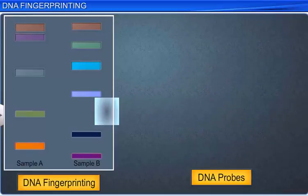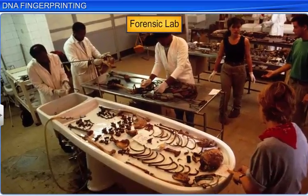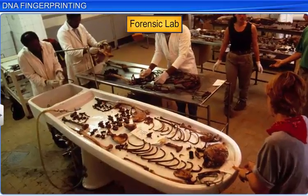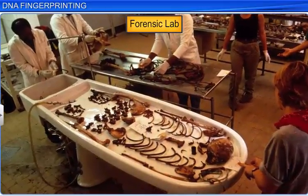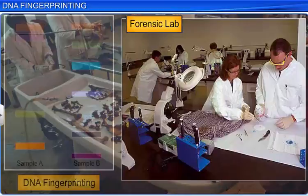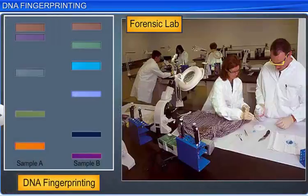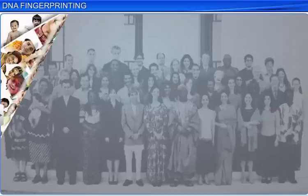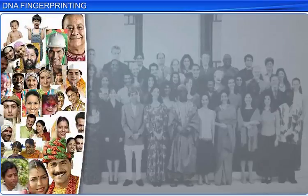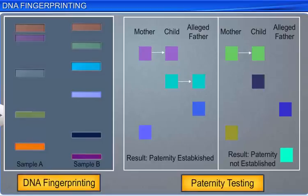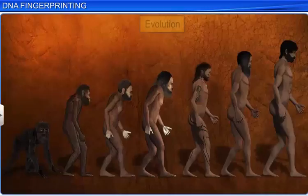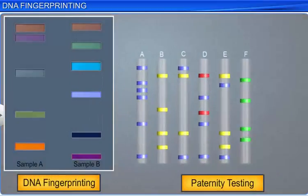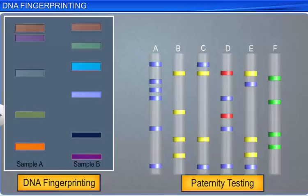DNA fingerprinting is used in many areas. It utilizes DNA as an identification tool and helps in forensic applications such as crime investigation. It also helps determine genetic and population diversity, forms the basis of paternity testing in case of parentage disputes, and also helps in the study of evolution and speciation. In this way, DNA fingerprinting has revolutionized the process of DNA testing, as it can identify the minute differences between various DNA samples.